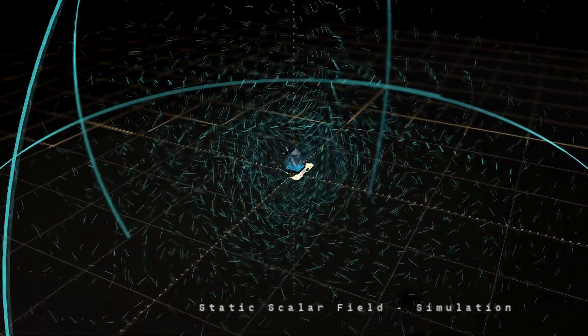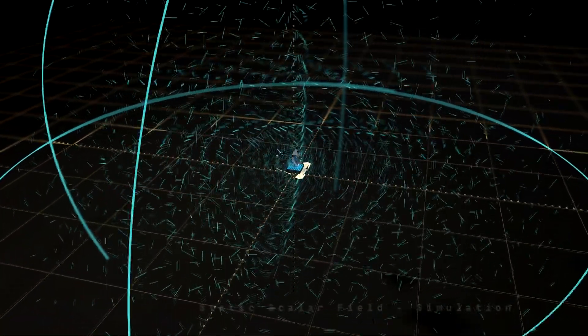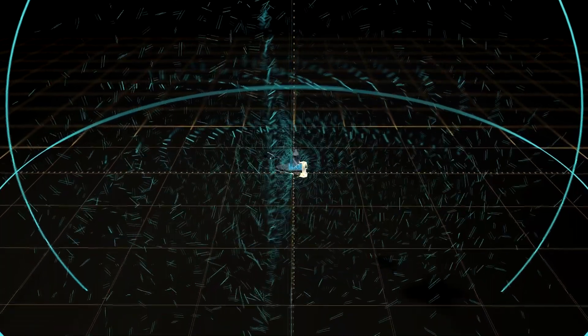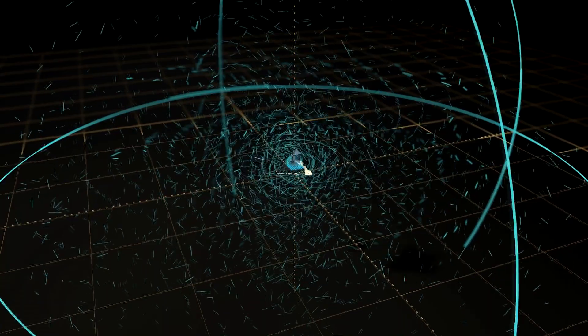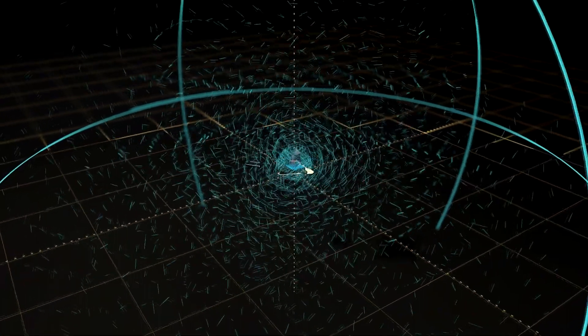This is how the Static Scalar Field looks like. It does have a linear directional energy emission and does not have a frequency. This type of static field appears to be easier to absorb by the human body, especially while sleeping.